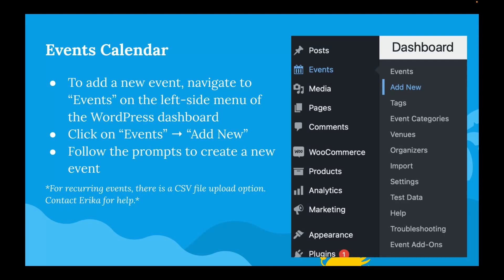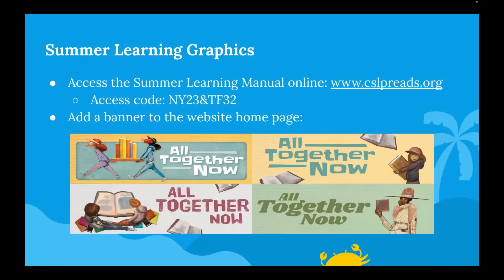To add a new event, click Add New and follow the prompts. If you have something like story time that happens at the same time every week, or a chess club that meets every Friday, you can use a CSV file — create the recurring event in an Excel sheet, save it as a CSV, and upload it. I'm happy to talk you through that process and provide a template for you to use.